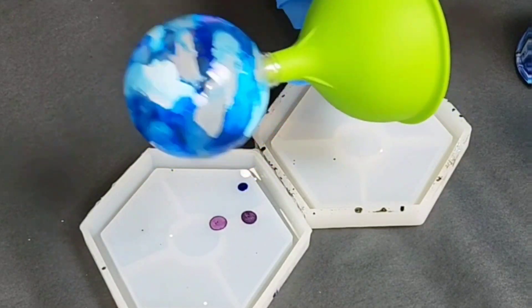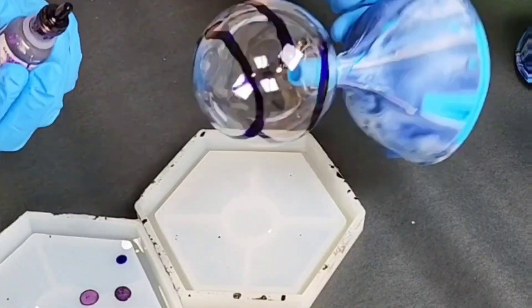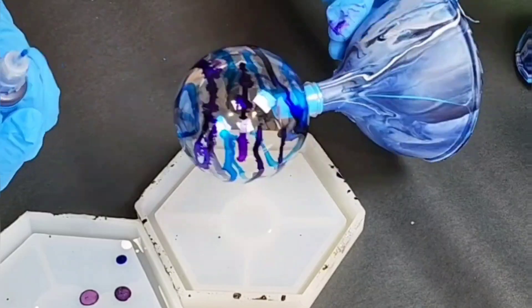Another thing you can do is after you have put your alcohol inks on there, you can give it a very light spritz with alcohol and that can just give you a little bit of a different pattern.